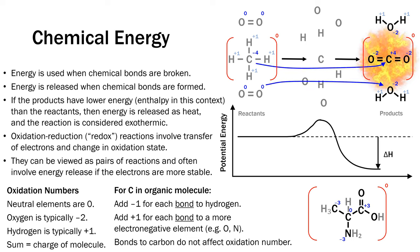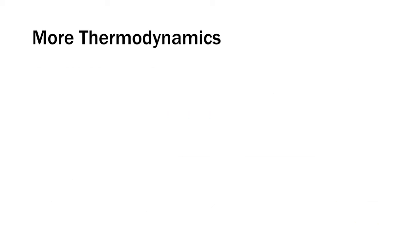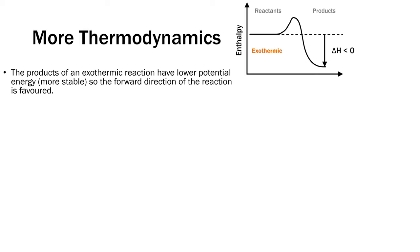Going back to the methane example: carbon has an oxidation number of minus four, which goes to plus four in CO₂. Oxygen goes from zero to minus two. The carbon has been oxidized and works as a reducing agent, while the oxygen has been reduced and is an oxidizing agent — with carbon donating two electrons to each atom of oxygen. As with a ball on a hill, the products of an exothermic reaction have lower potential energy and are more stable, so the forward direction is favored. For example, the oxidation of iron to form rust occurs spontaneously.